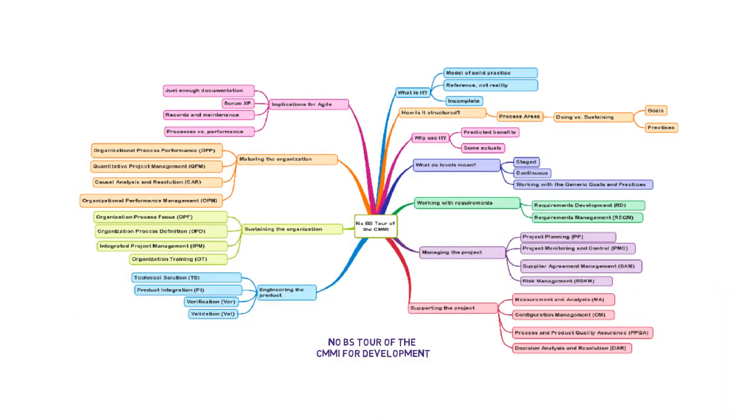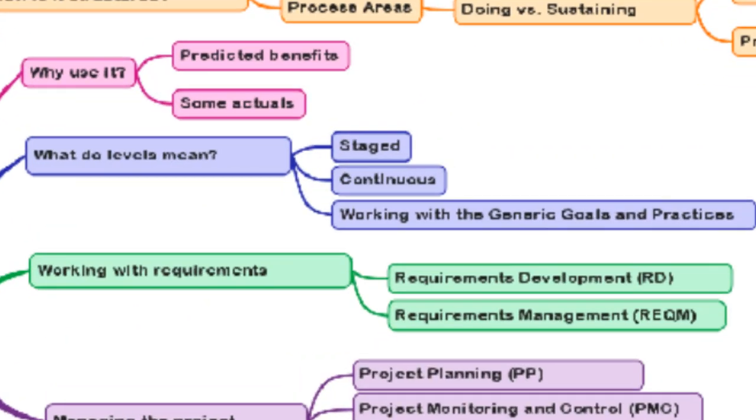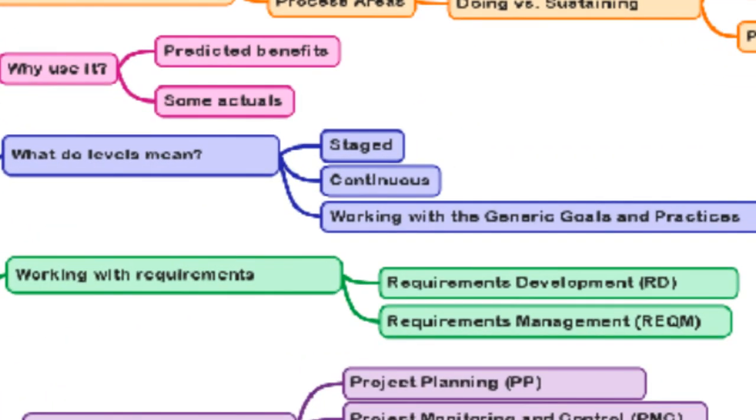In the last segments, we looked at what the process areas generally cover and how each is constructed, as well as the benefits of implementing the model effectively. Let's broaden our view and see how the set of process areas is organized. That way we can start to make some sense of the model.